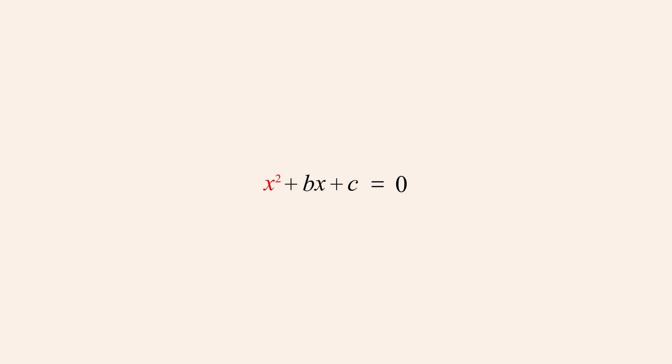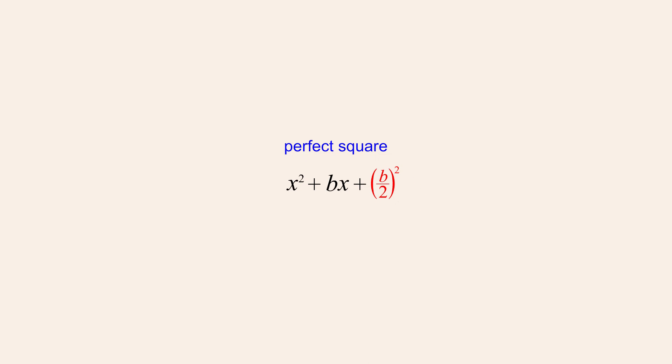So how do we determine the value of a constant term that will produce a perfect square? We will show that if the constant term of a quadratic expression in this form has a value of b over 2 quantity squared, that quadratic expression will be a perfect square.